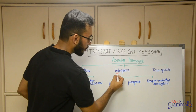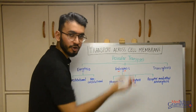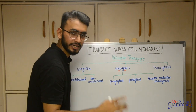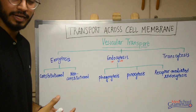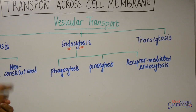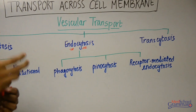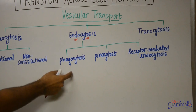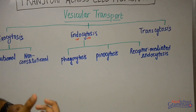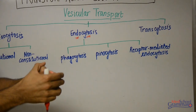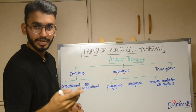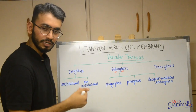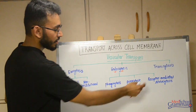Endocytosis means movement of vesicles from outside to inside the cell. It is of three types: phagocytosis, pinocytosis, and receptor-mediated endocytosis. Phagocytosis means cell eating — we've seen this with macrophages and neutrophils engulfing bacteria. The cell takes in solid particles via three steps: adhesion/attachment, engulfment, and intracellular killing. Pinocytosis means cell drinking — the cell takes in certain substances in liquid form.